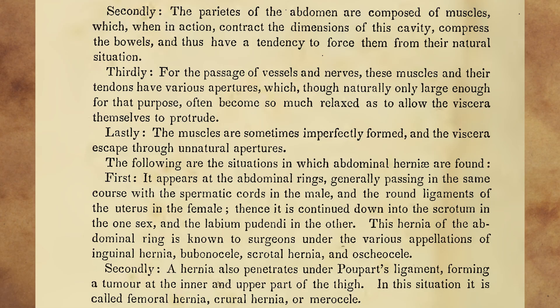Secondly, the walls of the abdomen are composed of muscles which, when in action, contract the dimensions of this cavity, compress the bowels, and thus have a tendency to force them from their natural situation. Thirdly, for the passage of vessels and nerves, these muscles and their tendons have various apertures, which, though naturally only large enough for that purpose, often become so much relaxed as to allow the viscera themselves to protrude. Lastly, the muscles are sometimes imperfectly formed, and the viscera escape through unnatural apertures.